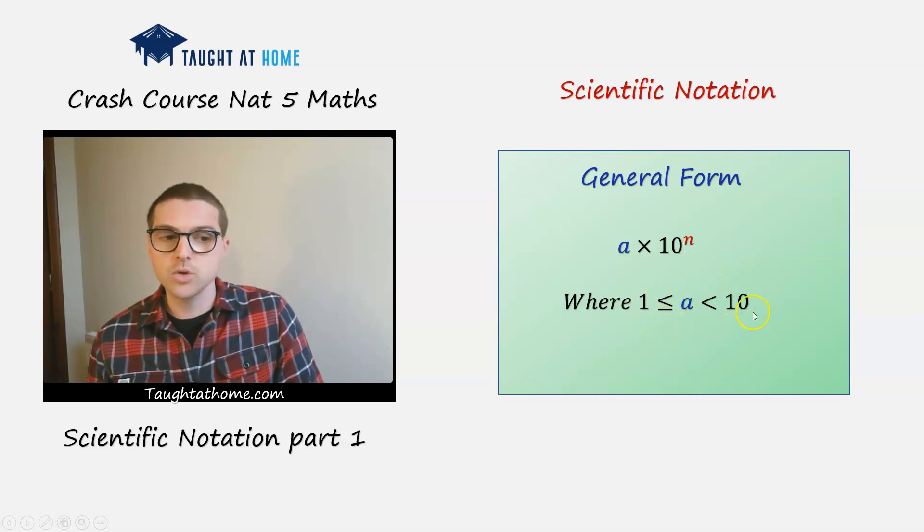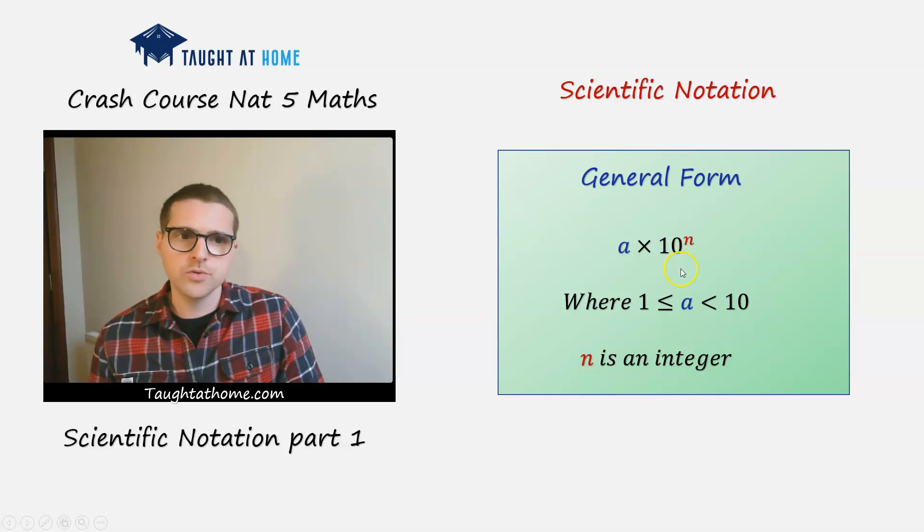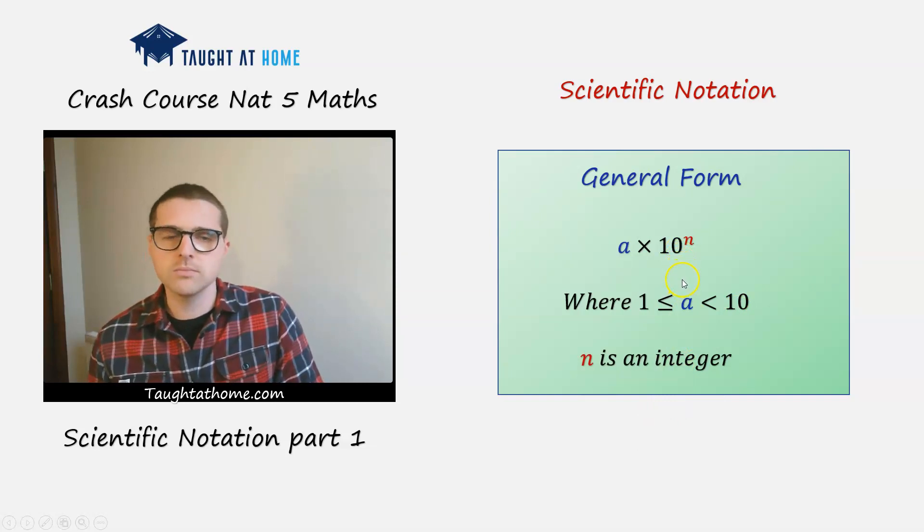So it can't be 10. Because in this case, if it was 10, the decimal point would have to go between the 1 and the 0. And n has to be an integer. So 1, 2, 3, 4, or negative 1, even 0.